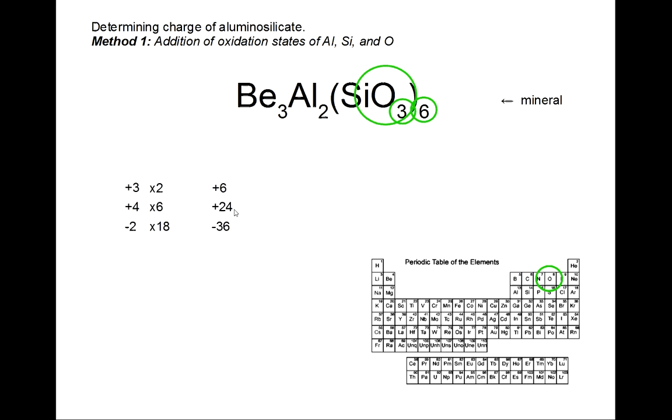Including the aluminum, silicon, and oxygen together gives us a total therefore of minus 6. Therefore the charge on the aluminosilicate anion is 6 minus.